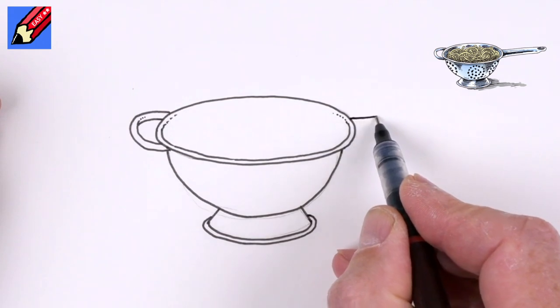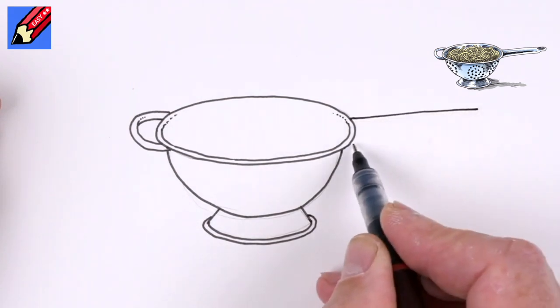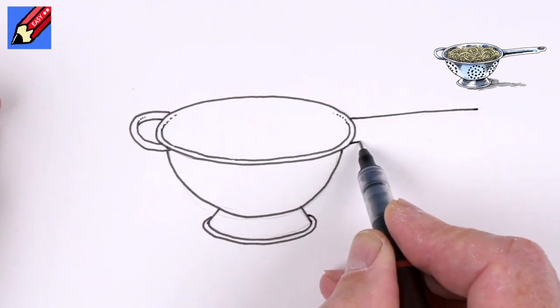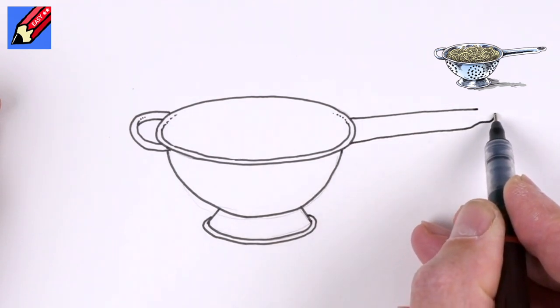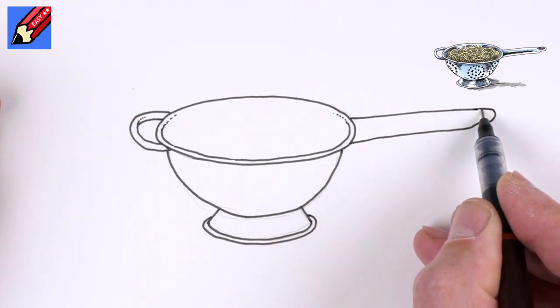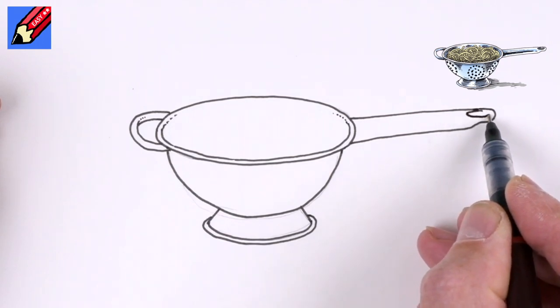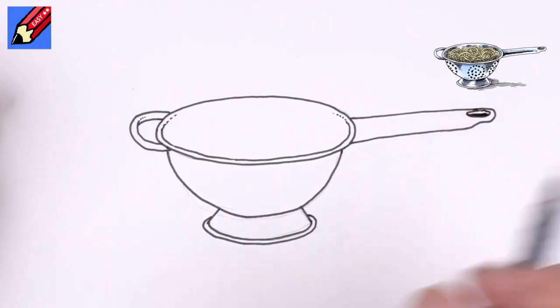we're going to have a handle. Just going to come out like that across there. And then like that. And then it might sort of curve a little bit like that. And then we're going to have a kind of a hole there where you can hang it up on the wall.